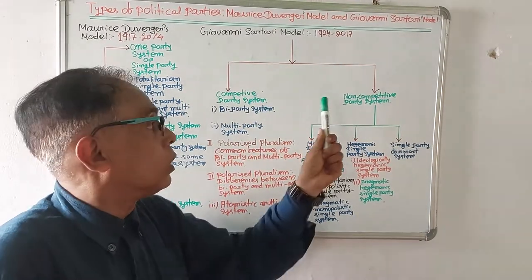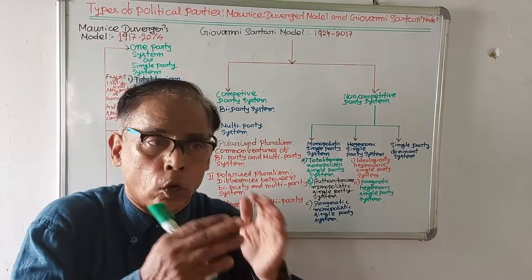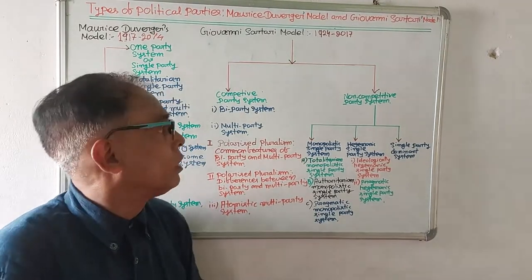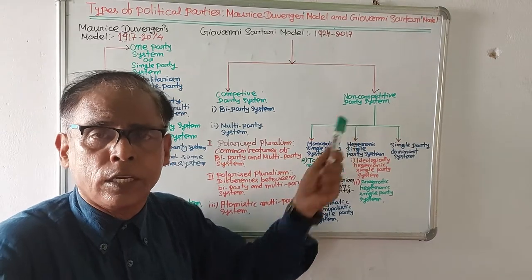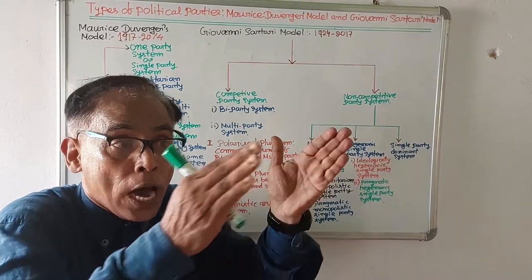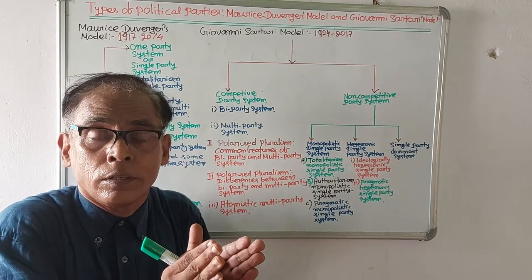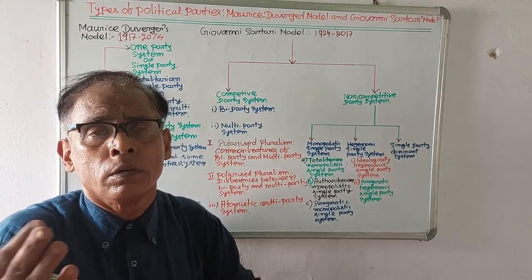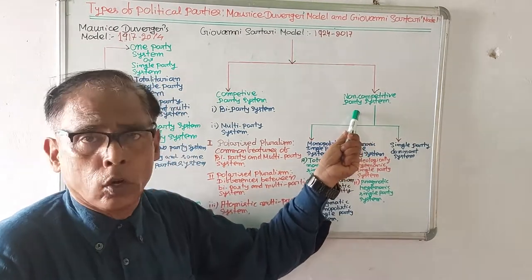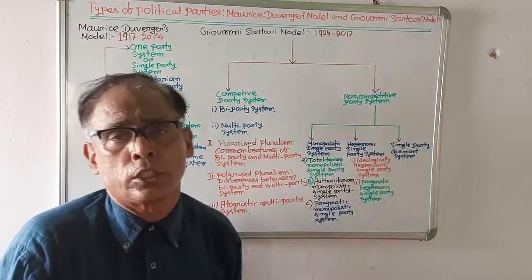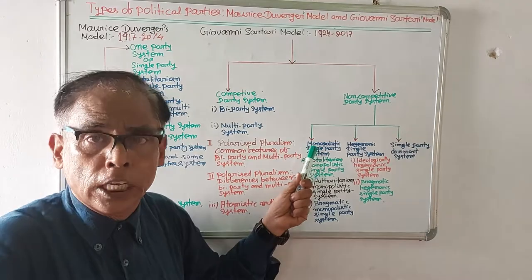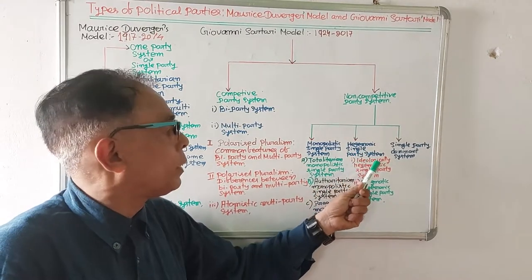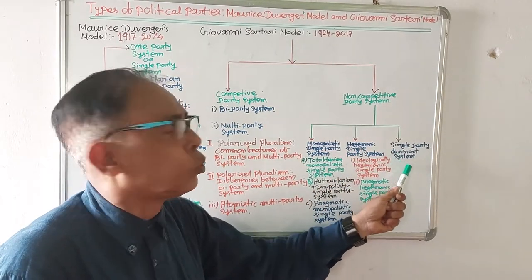Then he discusses the non-competitive party system. In a non-competitive party system, the chance of competition does not arise because he has included in this category the one party system. If in a country only one political party is found, the party will compete with whom? He has categorized the single party system into three categories: monopolistic single party system, hegemonic single party system, and single party dominant system.